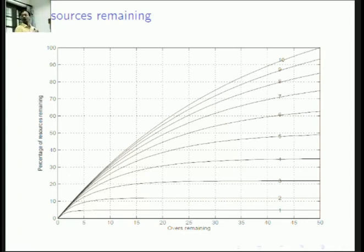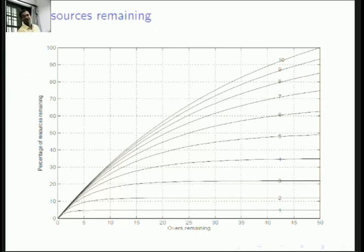So what one does is: find out how many resources have been lost due to the rain. Using these curves, you calculate what fraction of resources has been lost. And you essentially reduce the target in proportion to the resources that have been lost. That is the essence of the Duckworth-Lewis method.